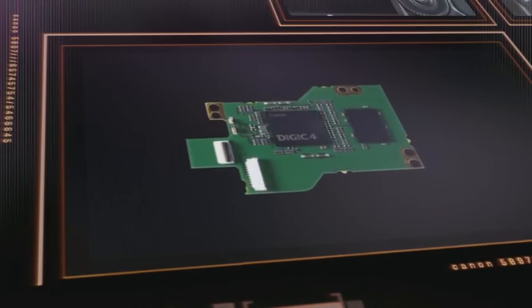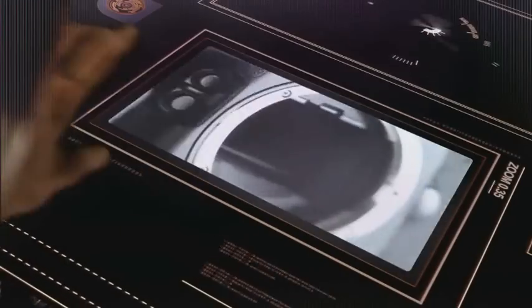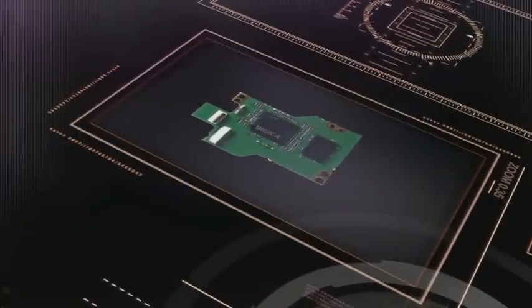The metering system gathers so much data, it needs its own Digic processor to cope with all of the information. The Digic 4 processor used to power the auto exposure system is the same processor we use to power the 5D Mark II.